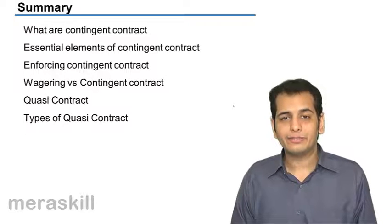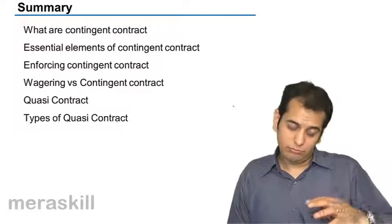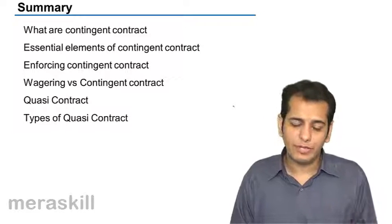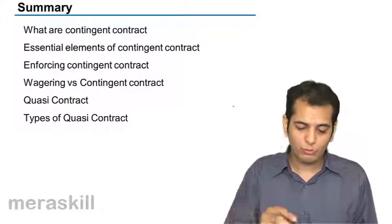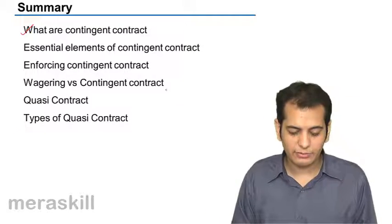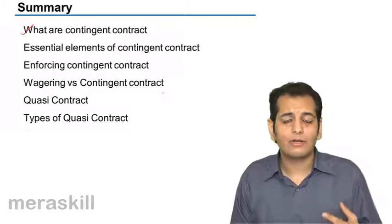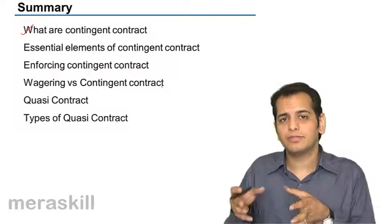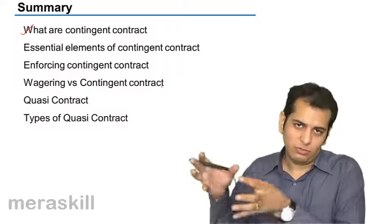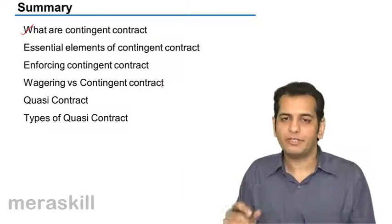In this topic, we have covered the topic of contingent and quasi-contracts. Contingent contracts, as we said, are contracts which are based on some collateral event — on the happening or non-happening of the event.